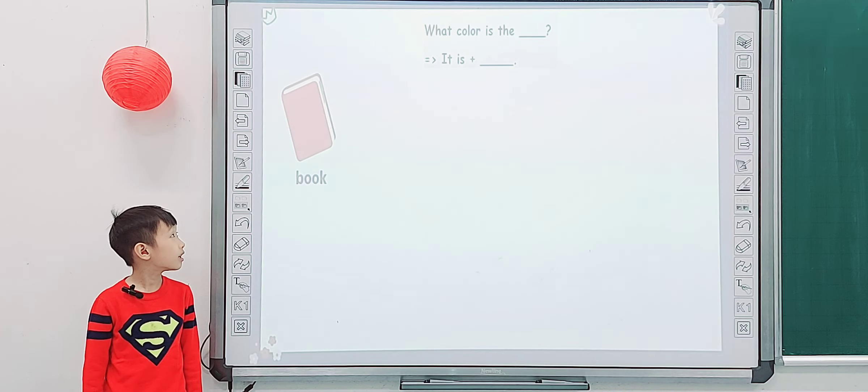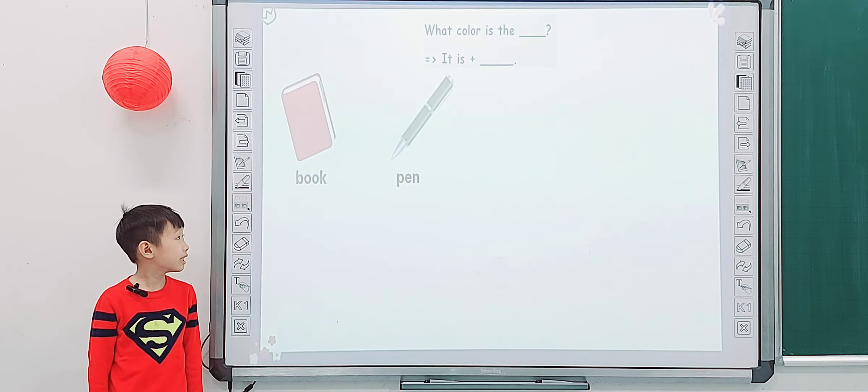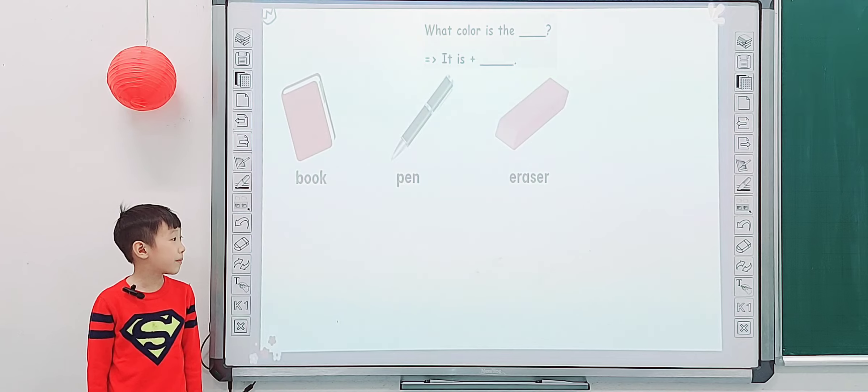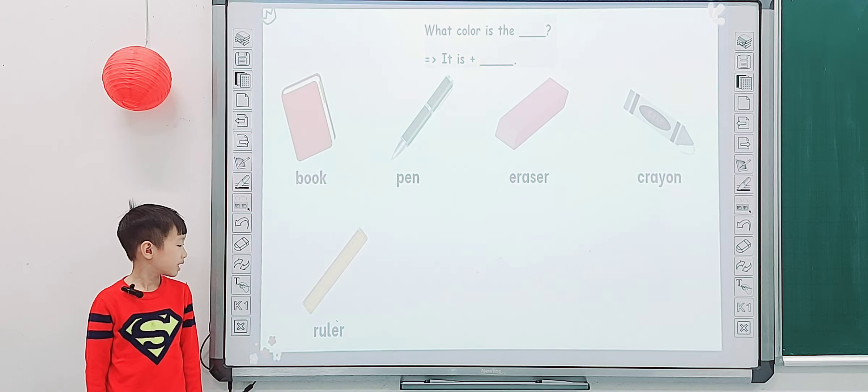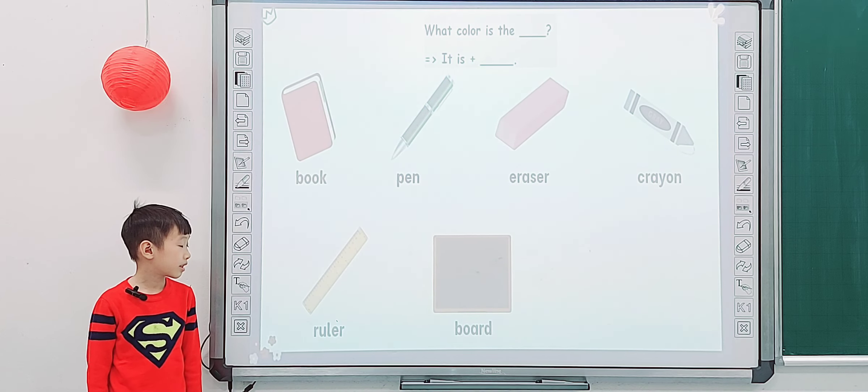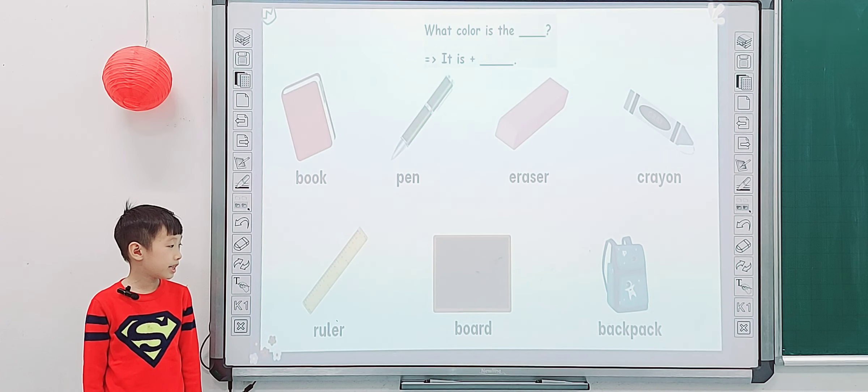And look at screen, tell me what color is the book? It is red. And what color is the pen? It is green. What color is the eraser? It is pink. It is pink. And what color is the crayon? It is white. Gray? What color is the roller? It is yellow. And what color is the board? It is black. What color is the backpack? It is blue. Blue.